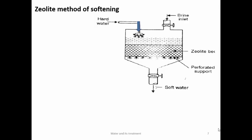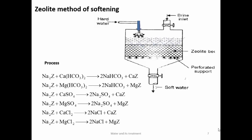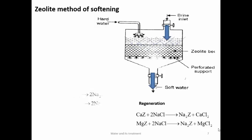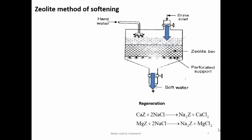Hard water is taken from one inlet and allowed to percolate through the zeolite bed. During this process: Na₂Z + Ca(HCO₃)₂ → 2NaHCO₃ + CaZ. Calcium is absorbed on the zeolite bed and soft water is removed from the bottom. After all impurities are replaced by Na⁺ ions, the zeolite bed gets exhausted. For regeneration, brine solution (10% NaCl) is added from the top and percolated through the bed; the reverse reaction takes place — Ca²⁺ is replaced by Na⁺, and Na₂Z is regenerated.